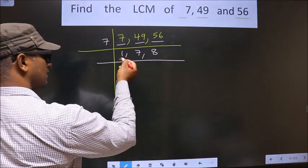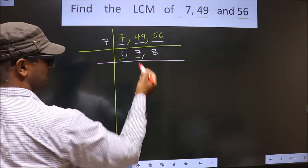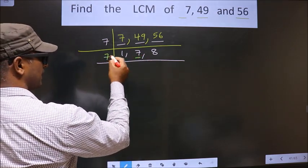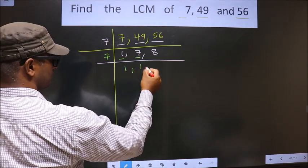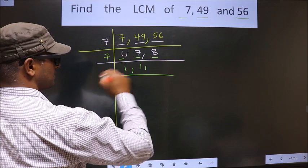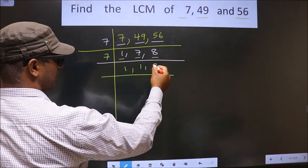Now here we got 1. So now we focus on the other number, that is 7. 7 is the prime number. So we take 7 once, 7. The other number, 8 is not divisible by 7. So you write down 8 as it is.